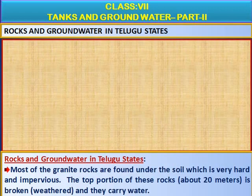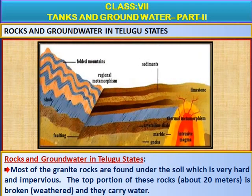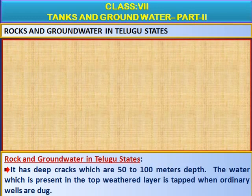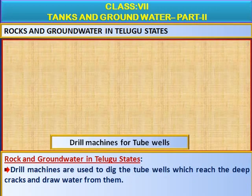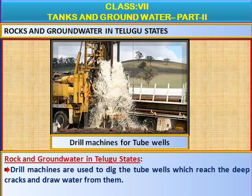Most of the granite rocks found under the soil are very hard and impervious. The top portion of these rocks, about 20 meters, is broken and weathered and they carry water. They have deep cracks of 50 to 100 meters depth. The water present in the top weathered layer is tapped when ordinary wells are dug, while drill machines are used to dig tube wells which reach the deep cracks and draw water from them.